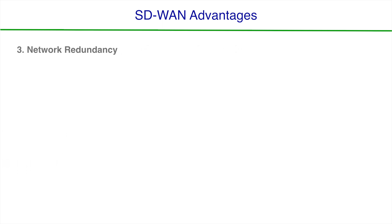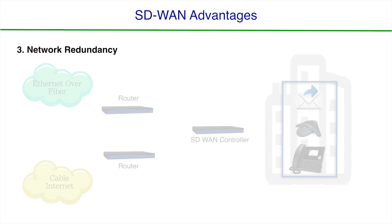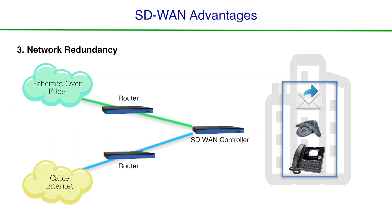Benefit number three, network redundancy. Here at RAM, we are most excited about the advantages that SD-WAN can bring for internet redundancy. With SD-WAN, the client can utilize two or more ISPs simultaneously. SD-WAN pools both pieces of bandwidth together, as you'll see in the illustration here. All applications, whether they be voice, VPN, instant messaging, or whatever the application happens to be, all of these can run over all or part of the available bandwidth at the location.